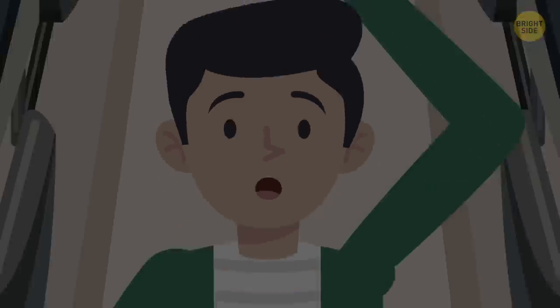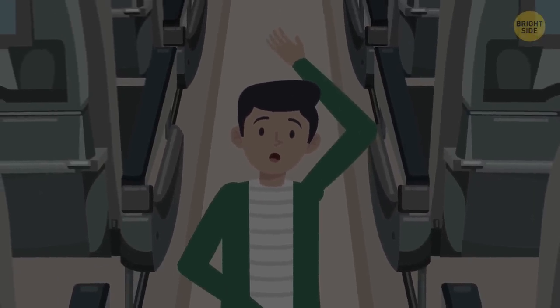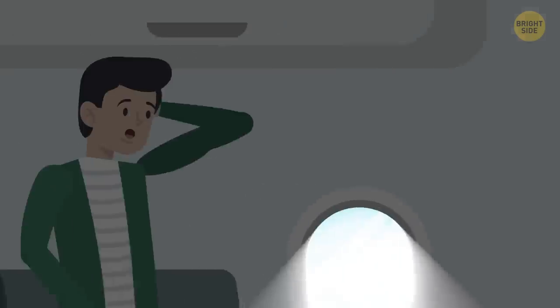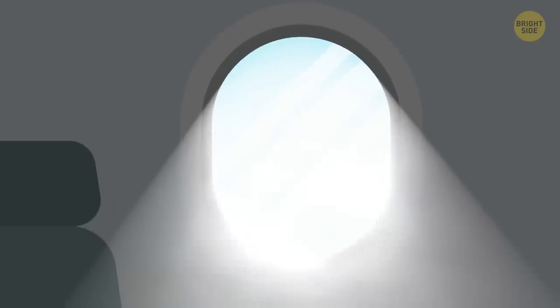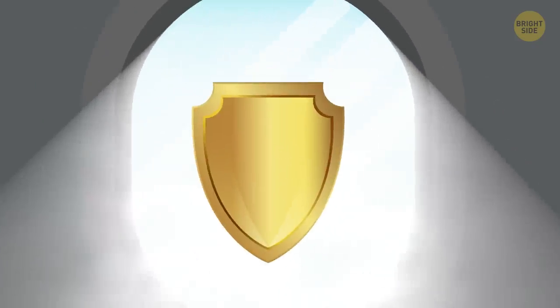But imagine this – your plane has gone down and you're the only person on board who's still conscious. The doors don't open after the accident and you see just one way to escape – through the window. You know, though, that airplane windows are almost unbreakable.